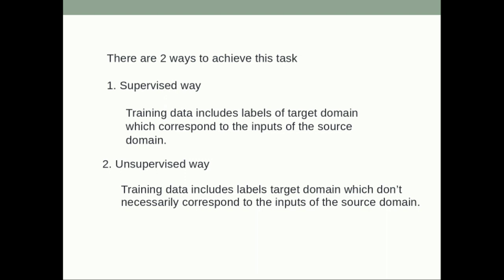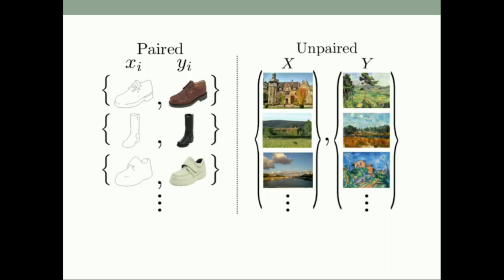This is an example of how supervised versus unsupervised algorithms work. In the paired (supervised) way you have input X_i and corresponding output labels, which is really hard to get. In the unpaired (unsupervised) way we don't need corresponding labels — we can take a bunch of images and make it work.